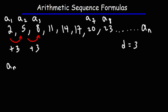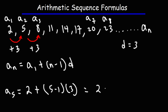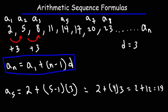To get the nth term of a sequence, you can use the formula: a sub n equals a sub 1 plus (n minus 1) times the common difference. For instance, to find the fifth term, it's 2 plus (5 minus 1) times 3. So 4 times 3 is 12, and 2 plus 12 is 14. So 14 is the fifth term. This formula tells us the value of any term in the sequence.